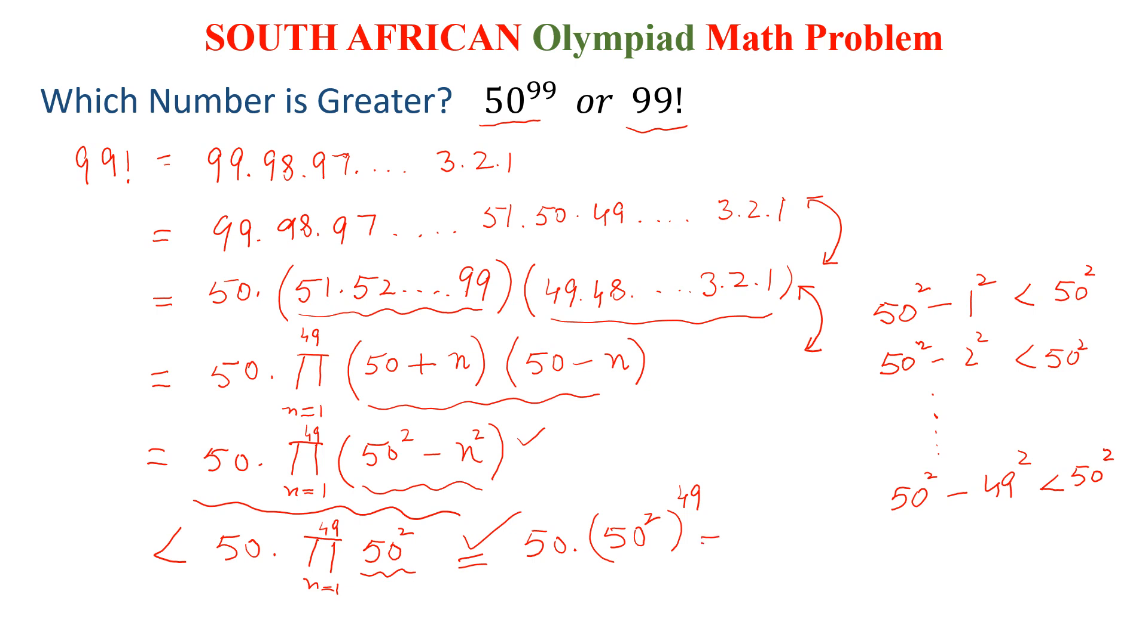And this is equal to 50 into 50 to the power 98. And this is equal to 50 to the power 99. So 99 factorial is less than 50 to the power 99. And this is the required answer.